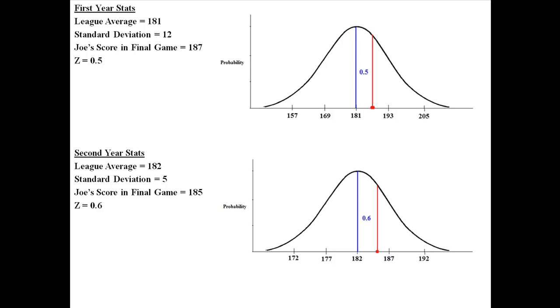So in the first year, he got a score of 187 in the final game. And in the second year, he got a score of 185. But now when you look at these graphs, you can see that compared to the rest of the distribution, compared to every other score in the distribution.